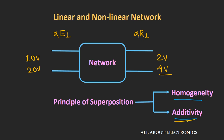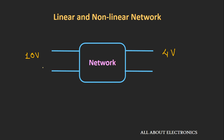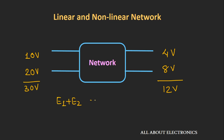Now let's see the property of additivity. Assume a network where applying 10V input gives 4V output, and applying 20V input gives 8V output. If we add these two input voltages and apply 30V as excitation, then if the network follows additivity, the output should be the summation of the individual responses — that is 12V. In general, applying E1 plus E2 as input should give R1 plus R2 as response, where R1 and R2 are individual responses for excitations E1 and E2 respectively. That is the property of additivity.